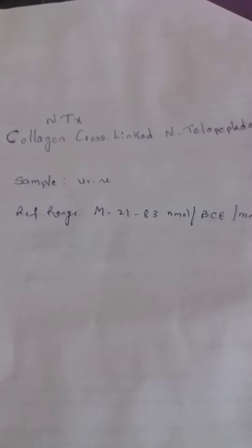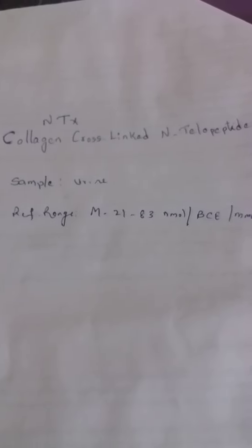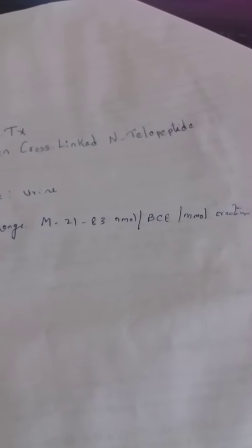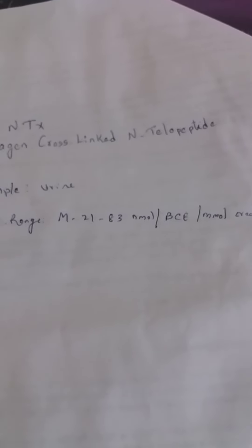Elevated levels of N-terminal telopeptide indicate increased bone resorption. The sample required is urine. Reference range for male is 21 to 83 nanomole BCE per millimole creatinine.